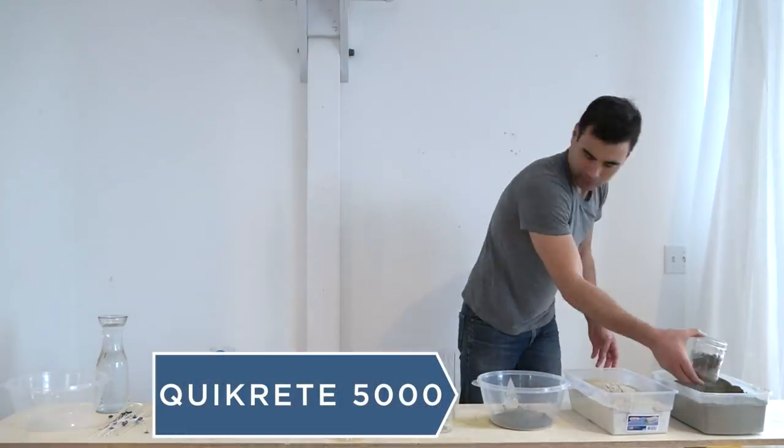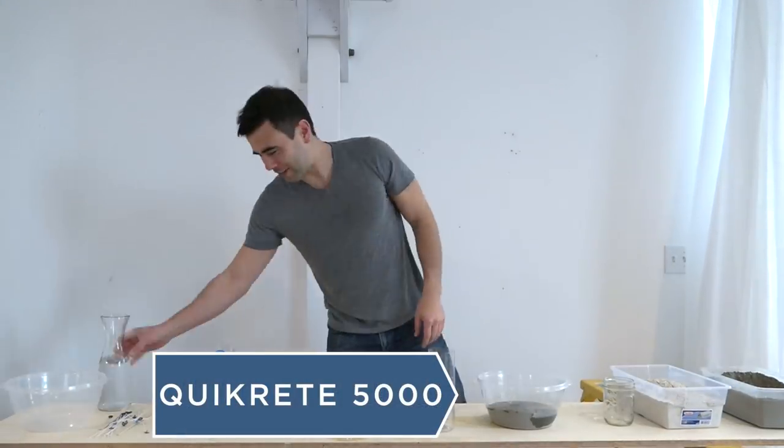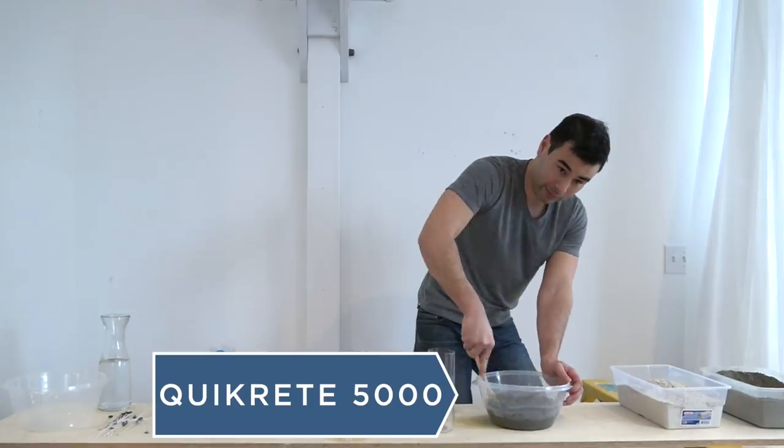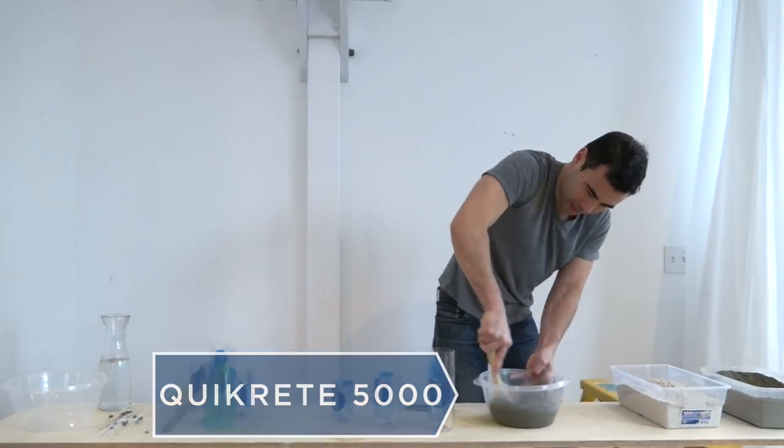I'm going to start by mixing up a batch of Quikrete 5000. It's a readily available concrete mix that has a nice gray color. I got mine at Home Depot.